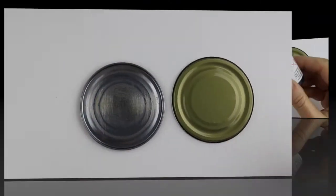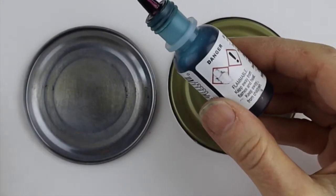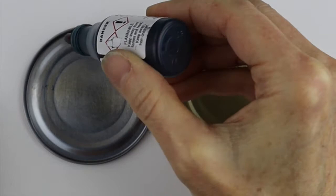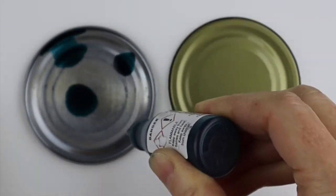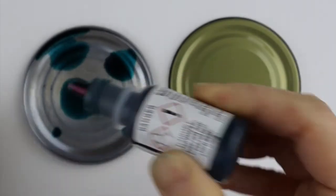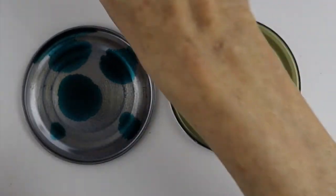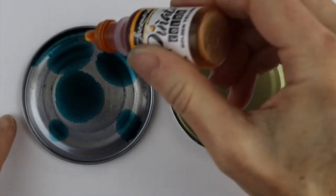We'll just take our inks. I'm not going to use a brush or anything, I'm just going to drop the inks on the metal and we're going to see what happens. We just want to do a little bit of each color. I'll start with that dark color - I probably should have started with a lighter one.